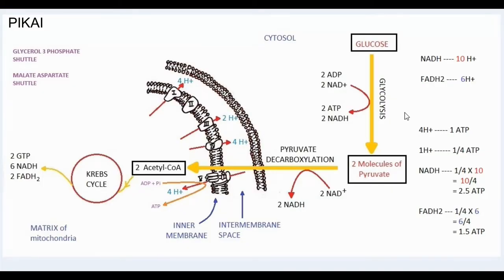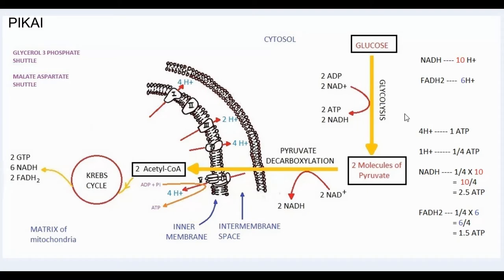In this video we'll be talking about the formation of ATP in aerobic respiration. First, let's start with the ATPs directly formed from substrate level phosphorylation. Glycolysis is a conversion of one molecule of glucose to two molecules of pyruvate in the cytosol, where we obtain two ATP molecules directly. Similarly, inside the mitochondrial matrix, the Krebs cycle produces two molecules of GTP, which are later converted to two molecules of ATP. So in total we obtain four ATP molecules by substrate level phosphorylation.